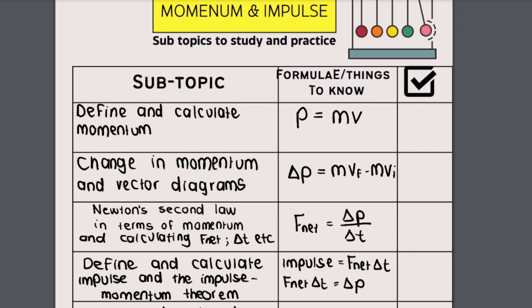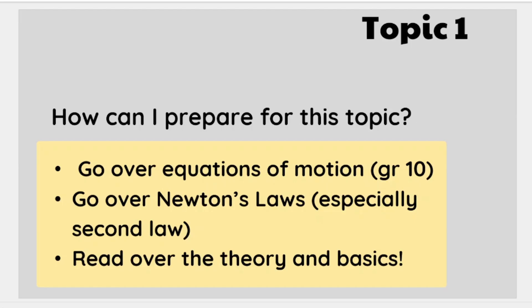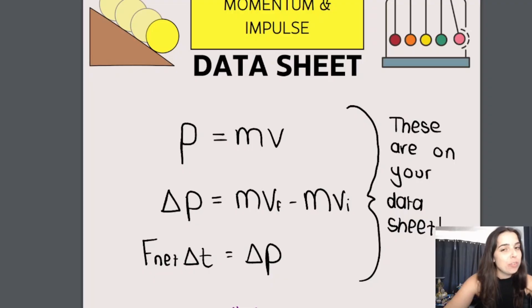How can you prepare for this chapter as a grade 12 learner? To prepare for momentum and impulse you can go over equations of motion from grade 10 and especially go over Newton's laws, especially Newton's second law. What I would recommend is reading the theory and the basics of momentum. It's always a good idea to read through the topic before your teacher even introduces it in class so that when they introduce it you're already familiar with the terminology and basic calculations.